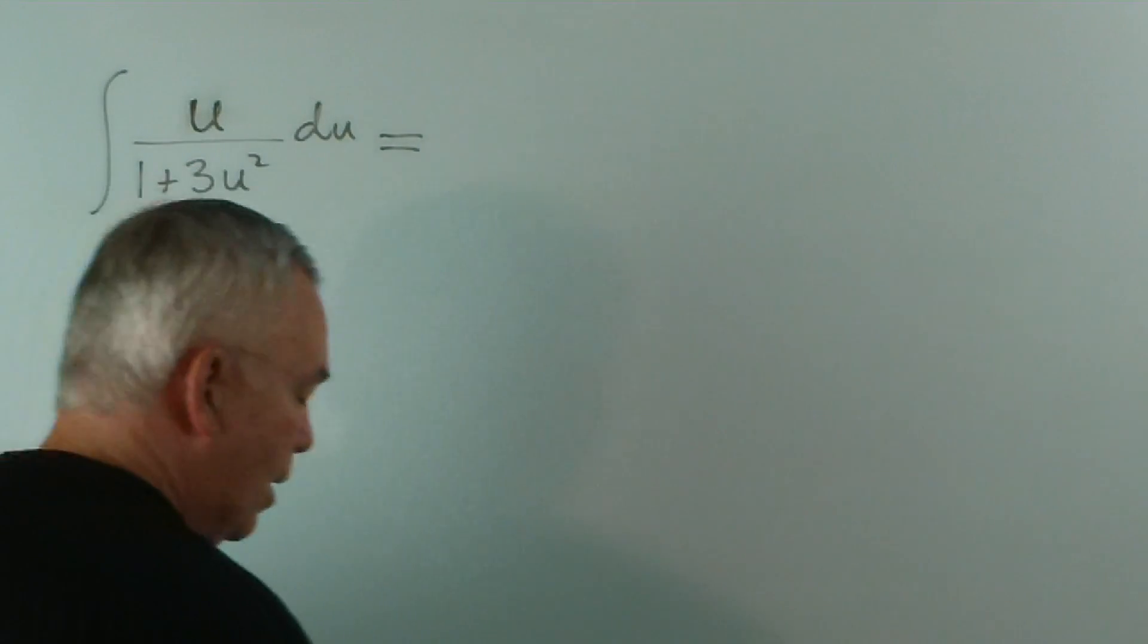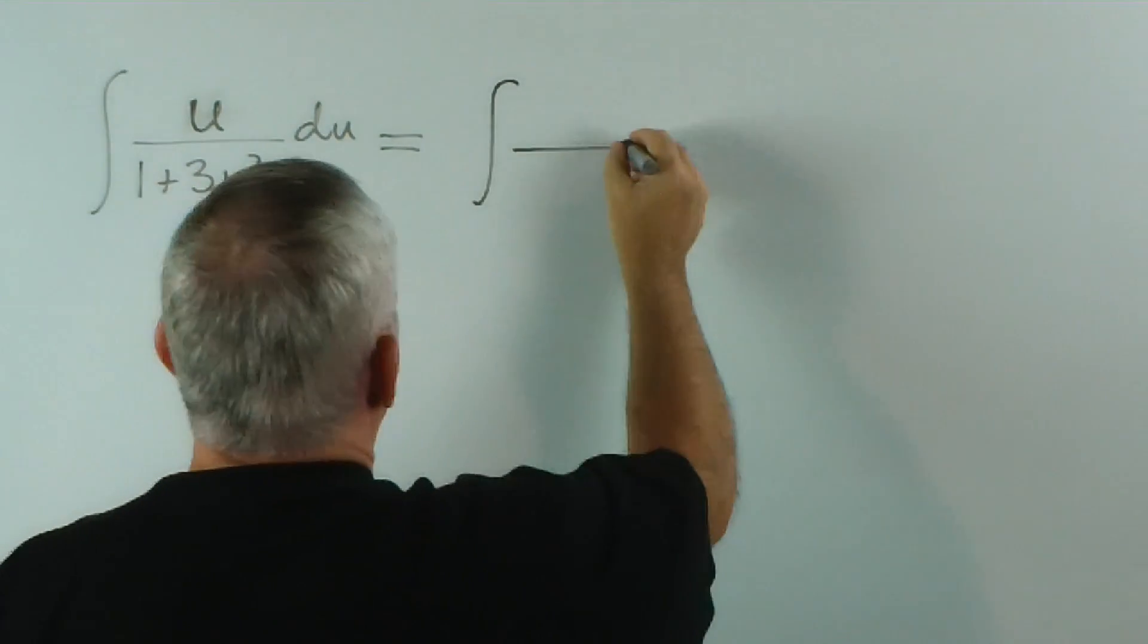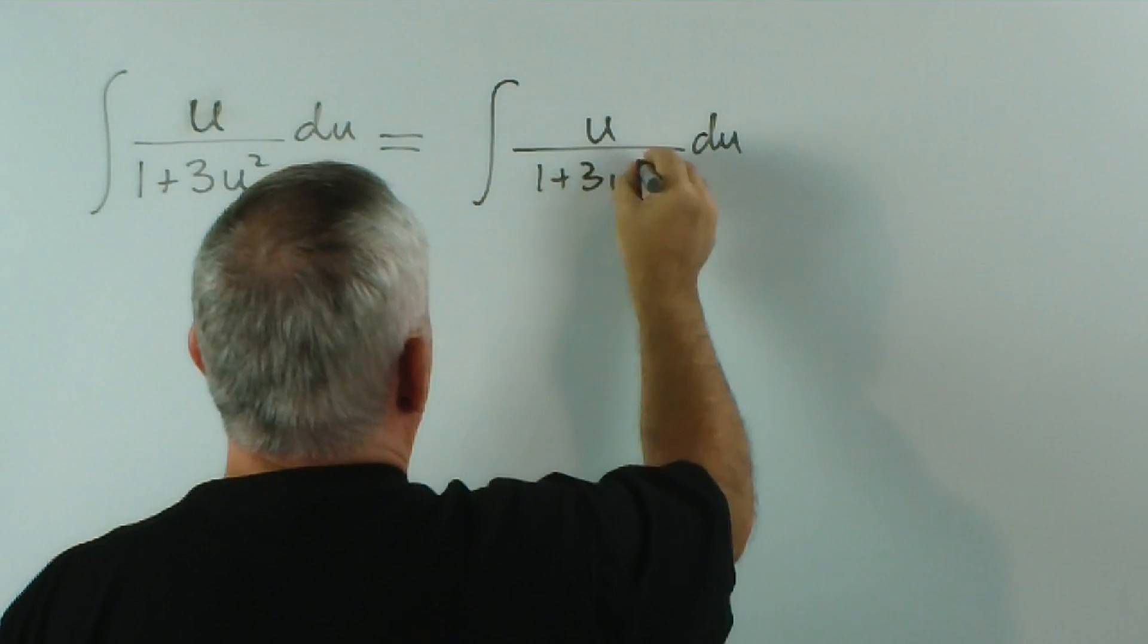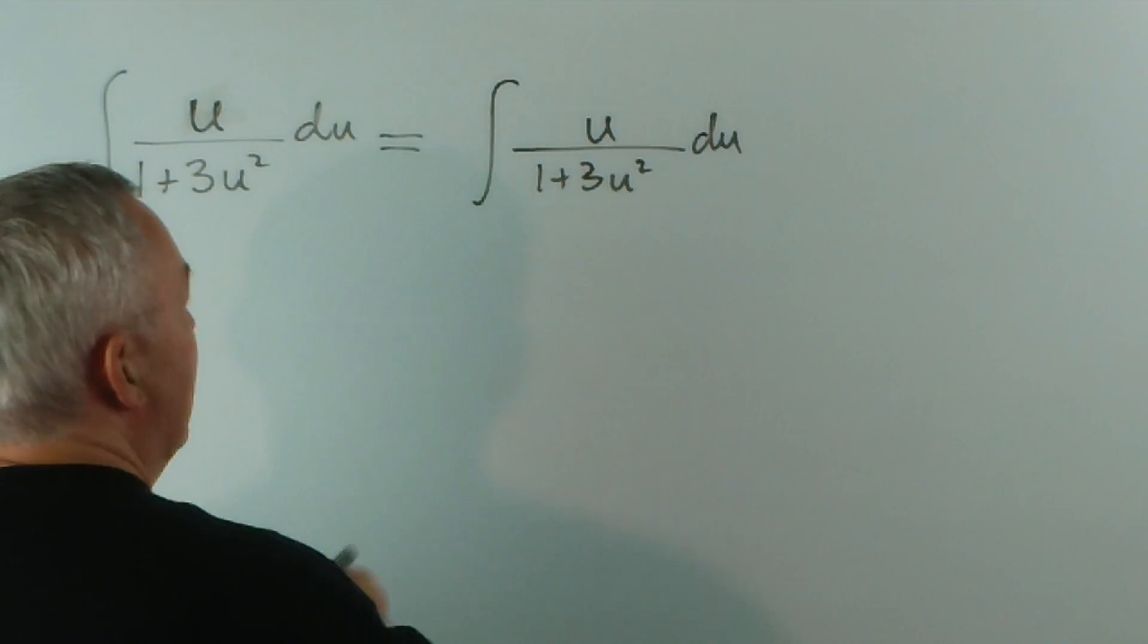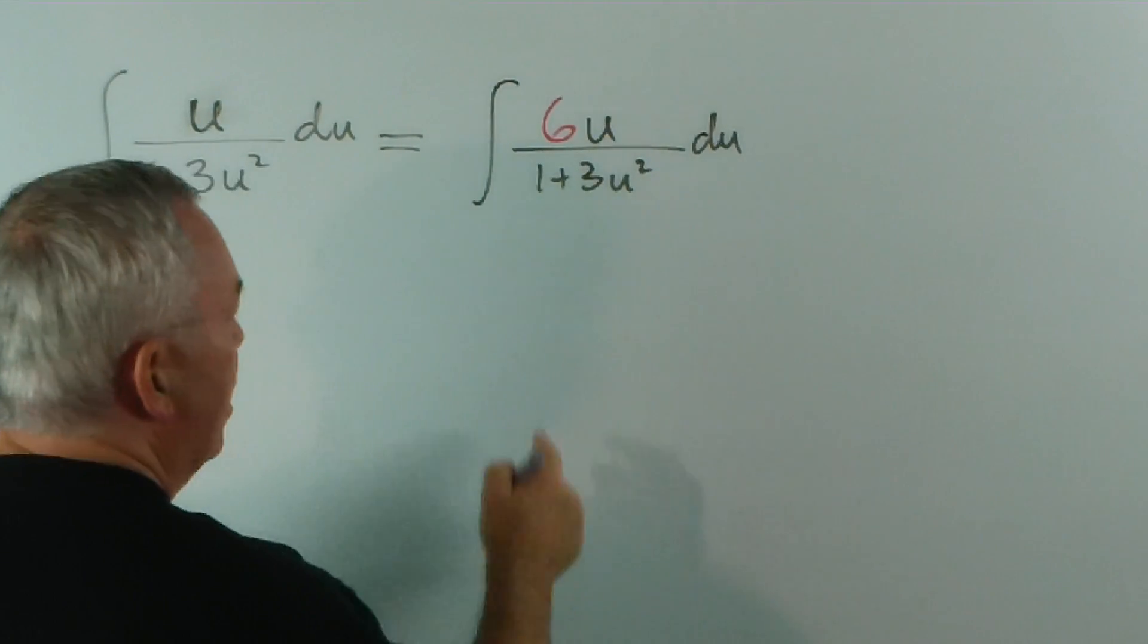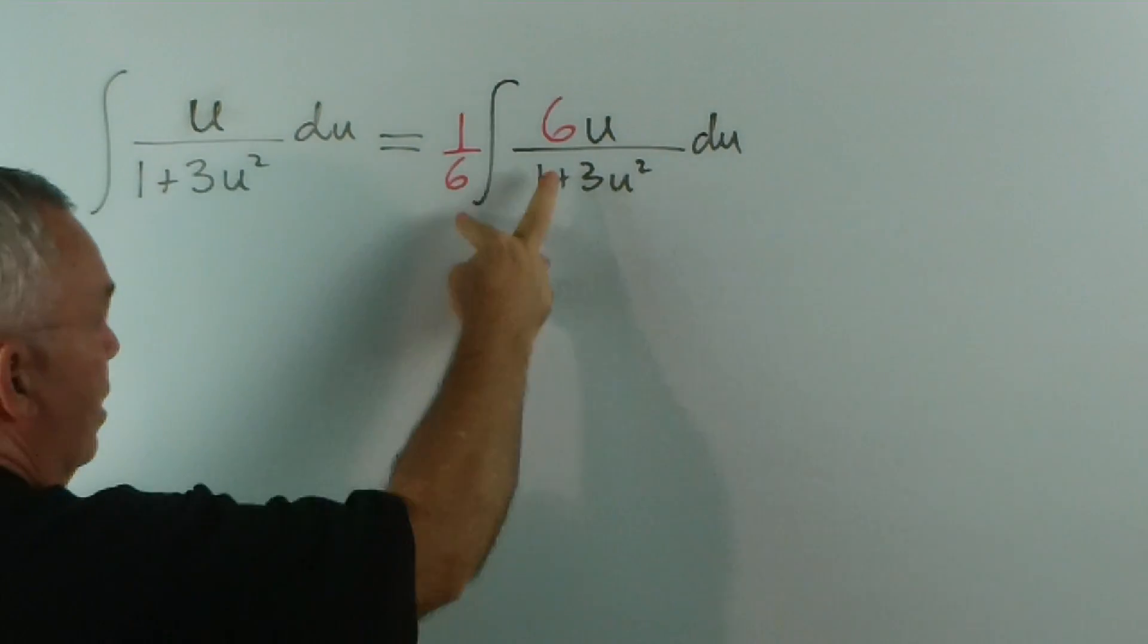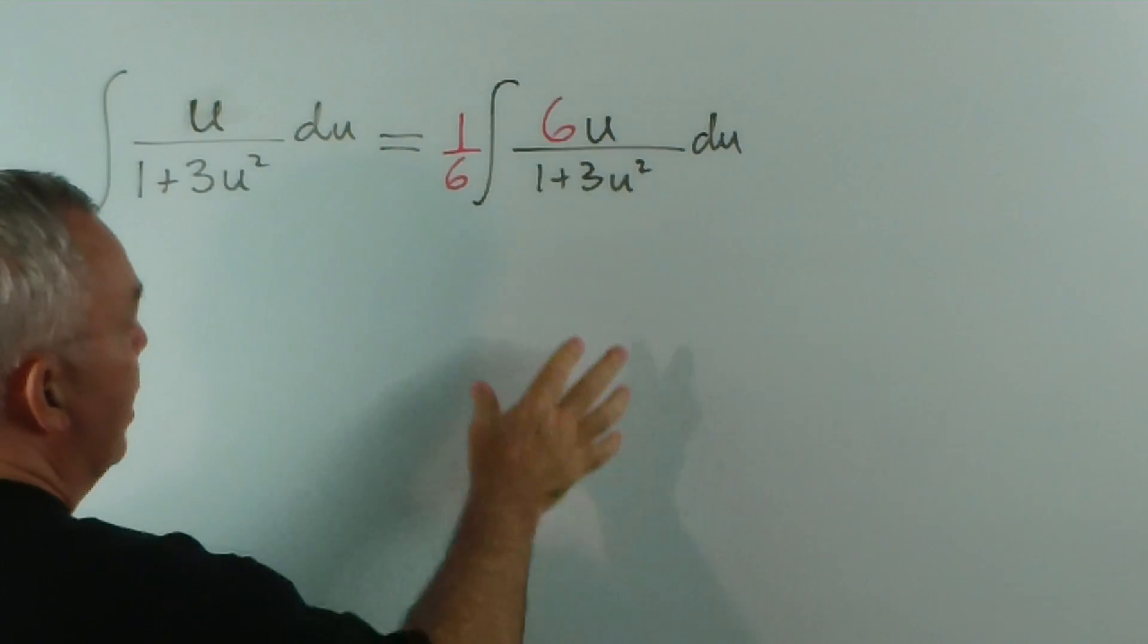So, the first method is to do this. Simply, to create a 6 so that we have the exact derivative on top and compensate by writing 1 sixth outside. Again, 1 sixth of 6 is 1. Multiplying by 1 makes no difference to the value.